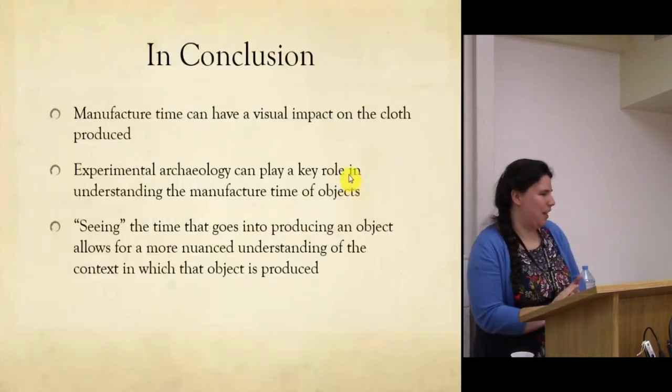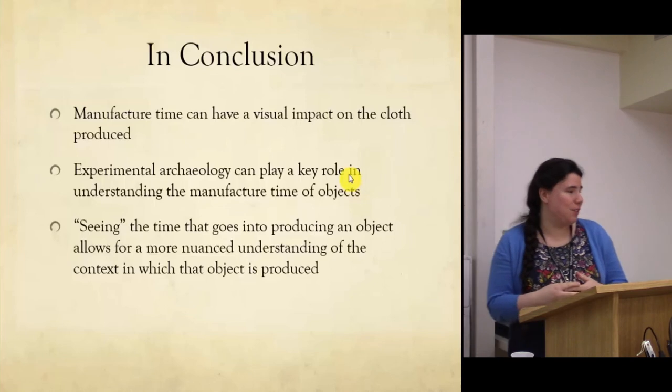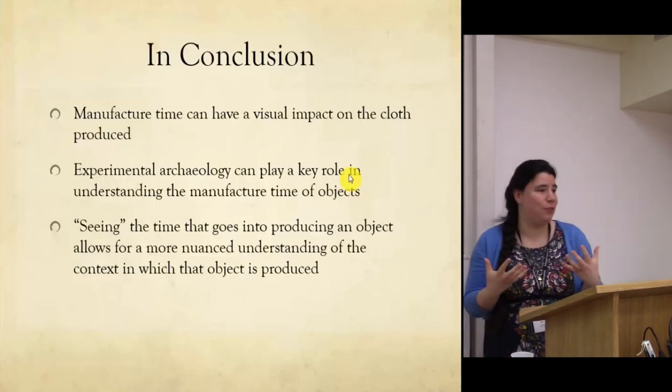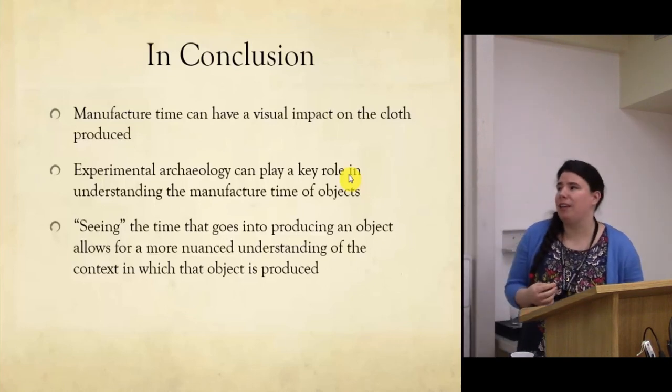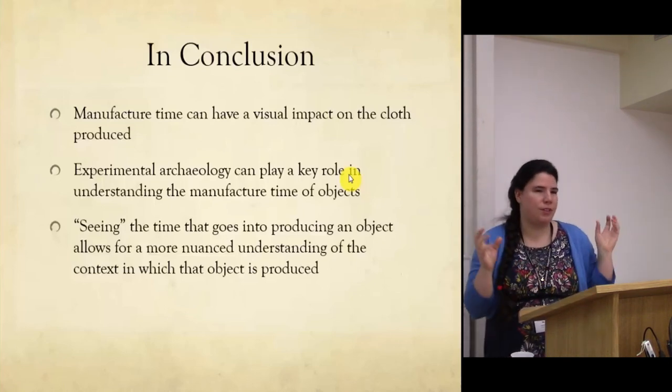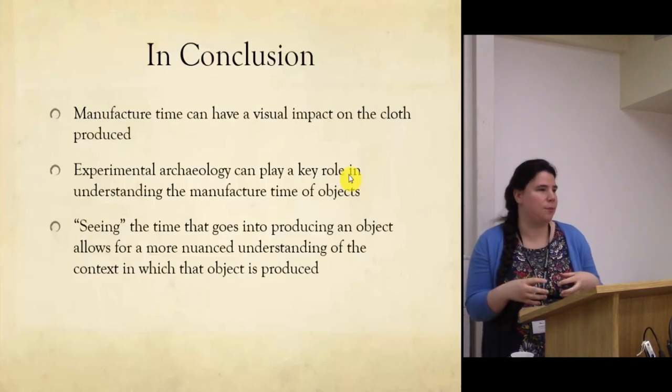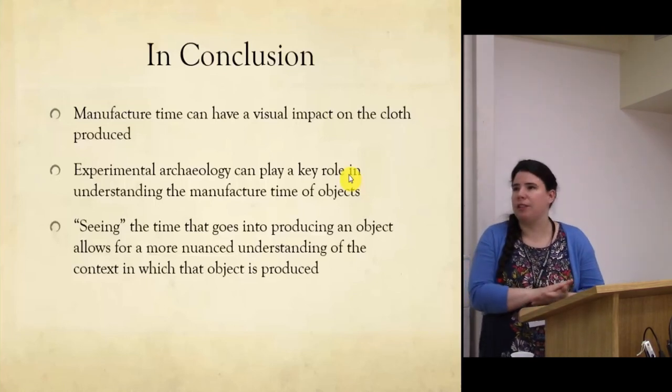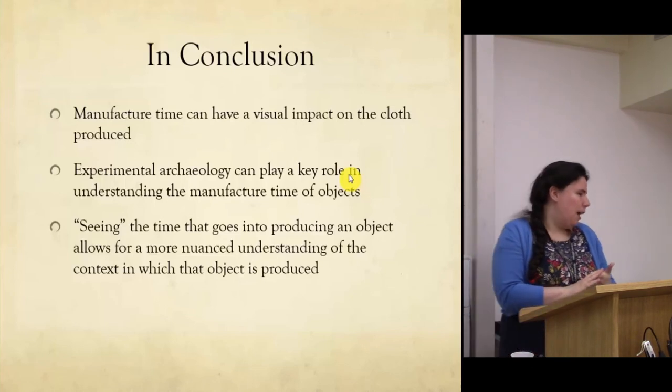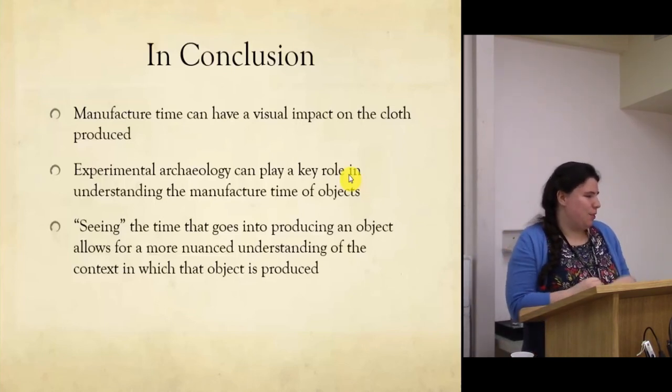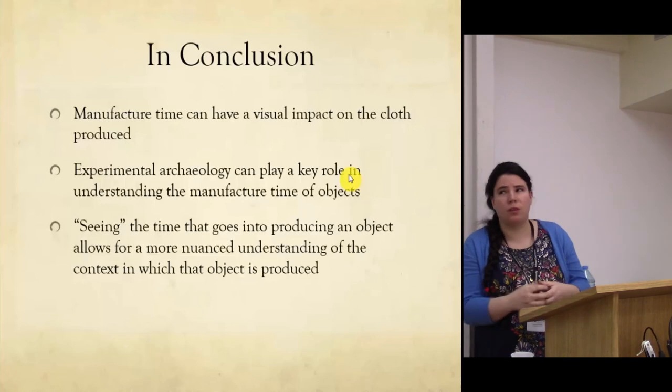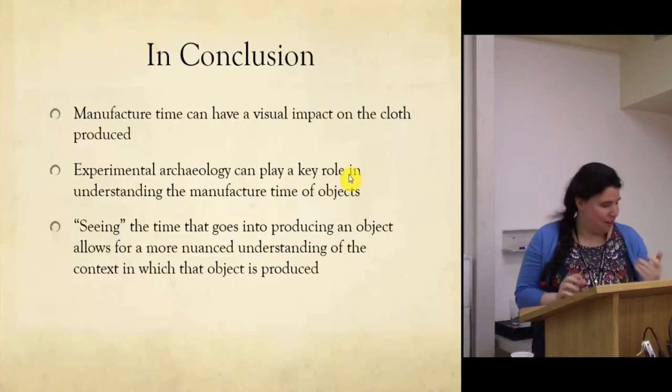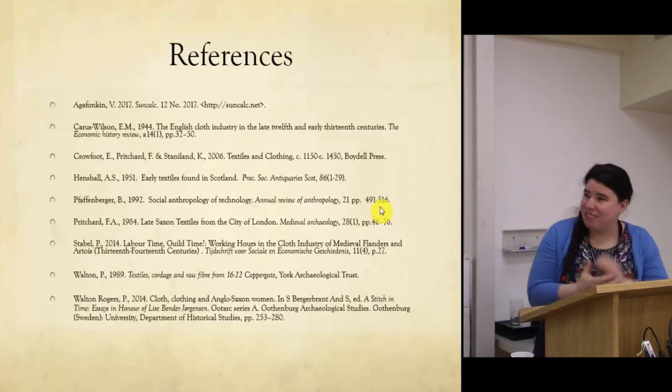What I'd like to leave you with is that I do believe that manufacturing time can have a visual impact on the piece of cloth being produced. I think that experimental archaeology can play a key role in having a deeper understanding of the time that goes into manufacturing objects, and comparative experiments are particularly useful. Seeing the time that goes into producing an object can allow for a more nuanced understanding of the context in which that object is produced and hopefully provide a bit more of a personal connection with the people making these objects. That's it. Thank you very much.